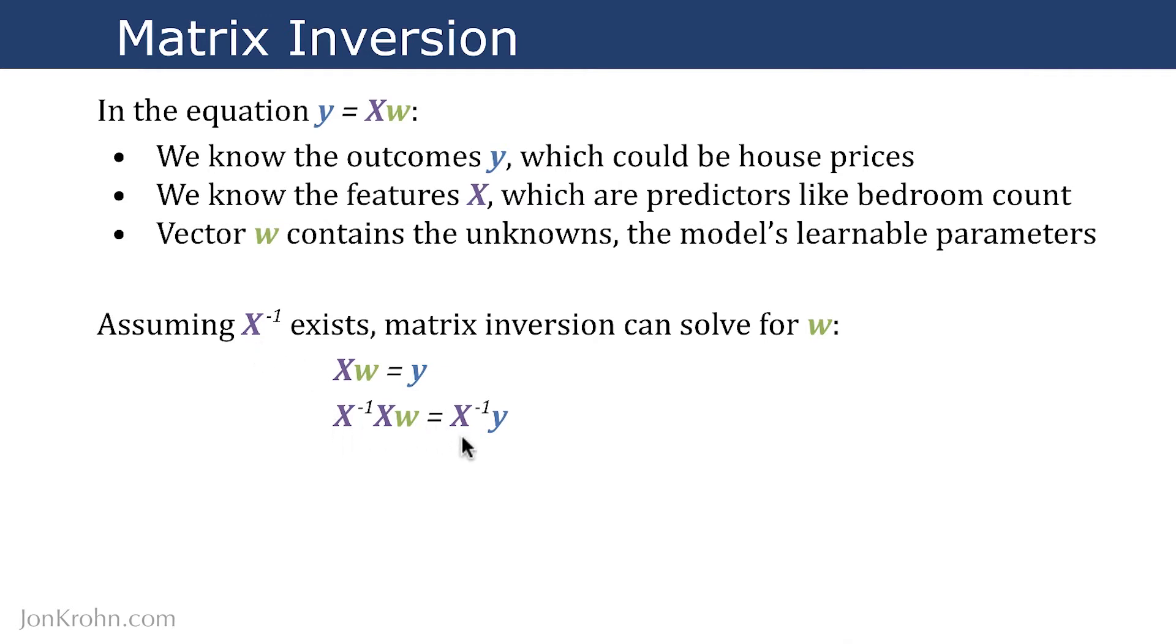Now, let's add in the matrix inverse. So we can multiply both sides of the equation by the inverse of x. And on the left side of the equation, because of the property that we discussed on the first slide of this video, we know that the matrix inverse times the original matrix results in an identity matrix. And we know from an earlier video, called symmetric and identity matrices, that when we multiply a vector times an identity matrix, we just end up with that vector as a result.